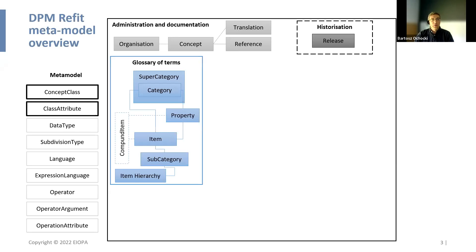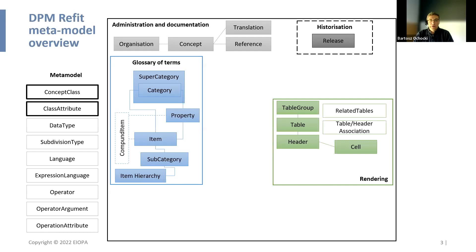The model itself is broken down into the glossary, where we define the basic business terms that we will later use to describe information requirements. There is the rendering package, which is really important because this is how information requirements are currently defined by users — they provide in the ITSs and other regulations table and views. We need to be able to resemble that.